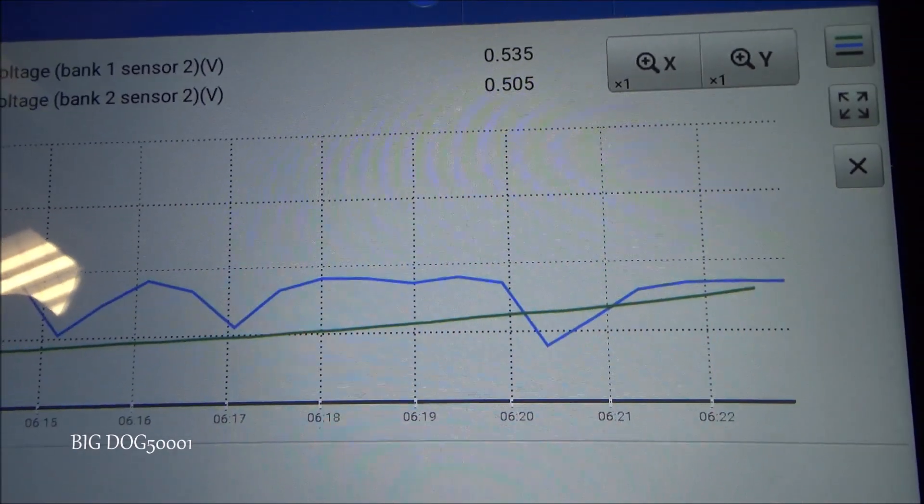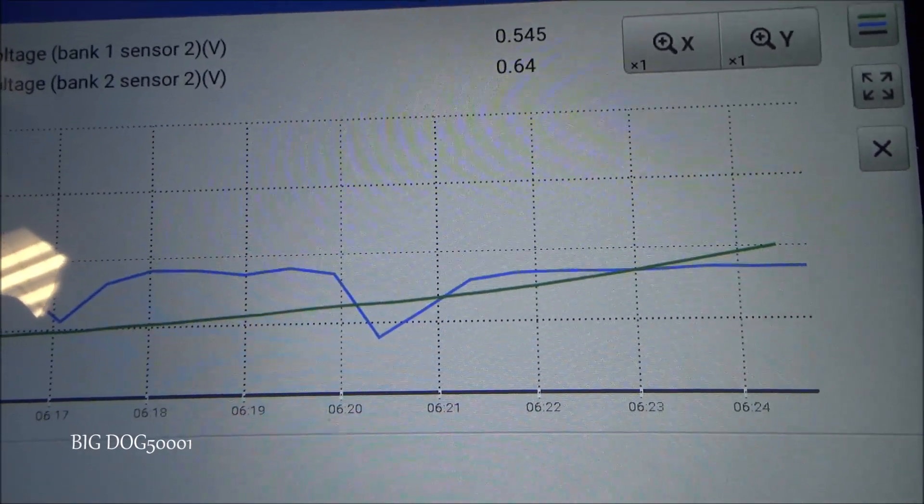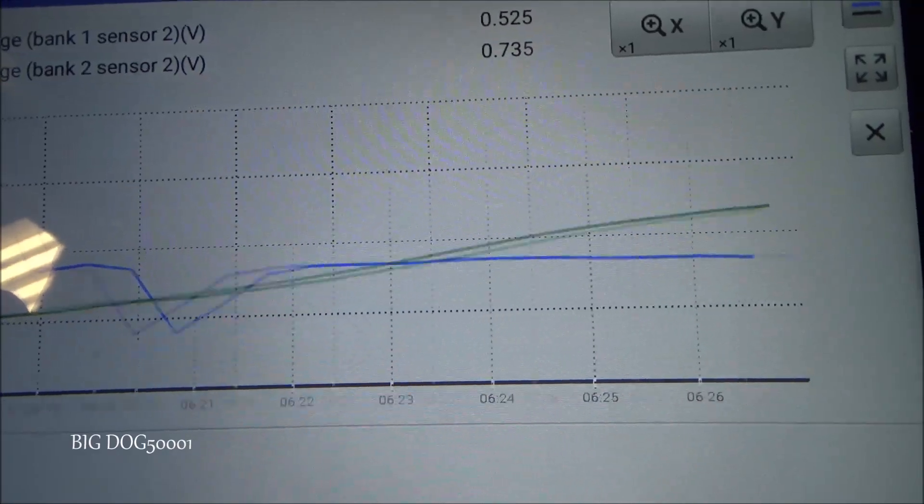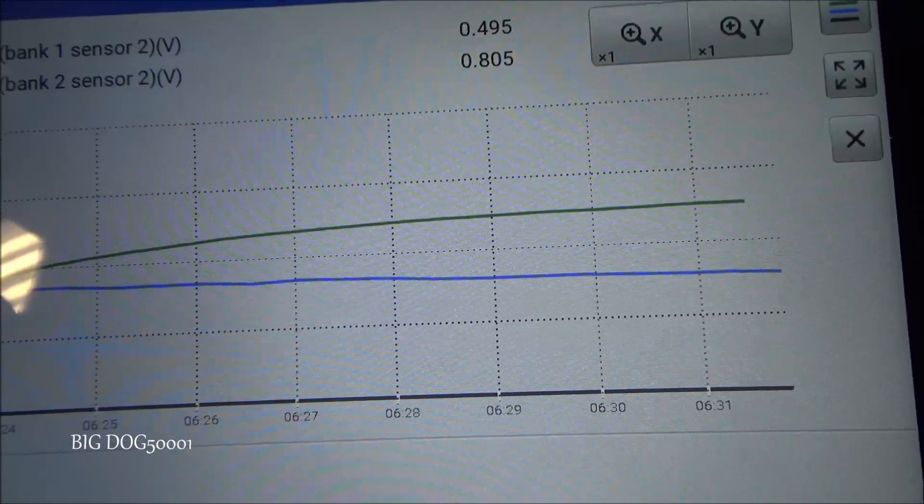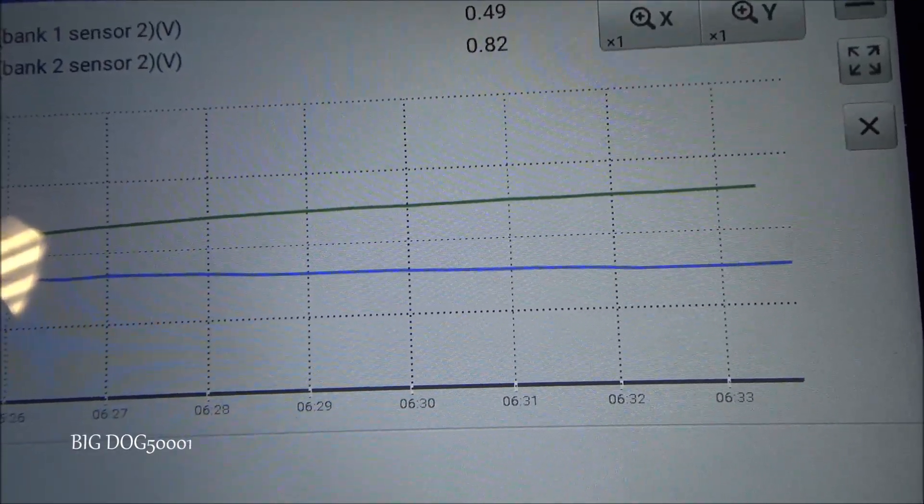I switched over to the OBD2 side of things. And I graphed our two oxygen sensors, our downstream oxygen sensors. And you can see how choppy our data pids are on the OBD2 side. I definitely like the OEM side better.